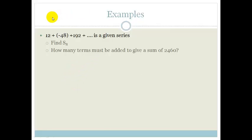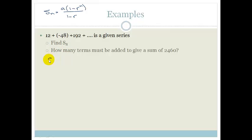So Sn equals a(1 minus r to the n) all over (1 minus r). The given series is 12, minus 48, 192, and it says find S8. We have a which is 12. We need r — r equals t2 divided by t1, which is negative 48 divided by 12, which gives us negative 4.